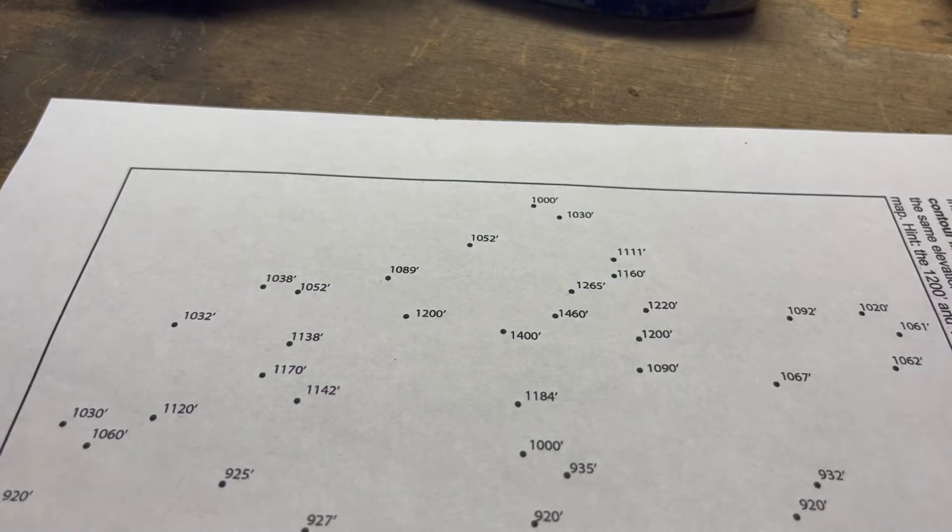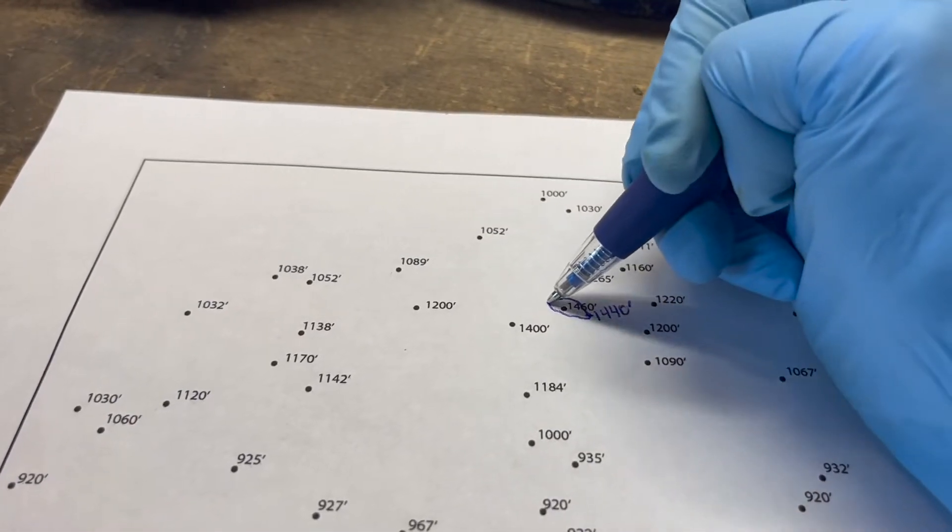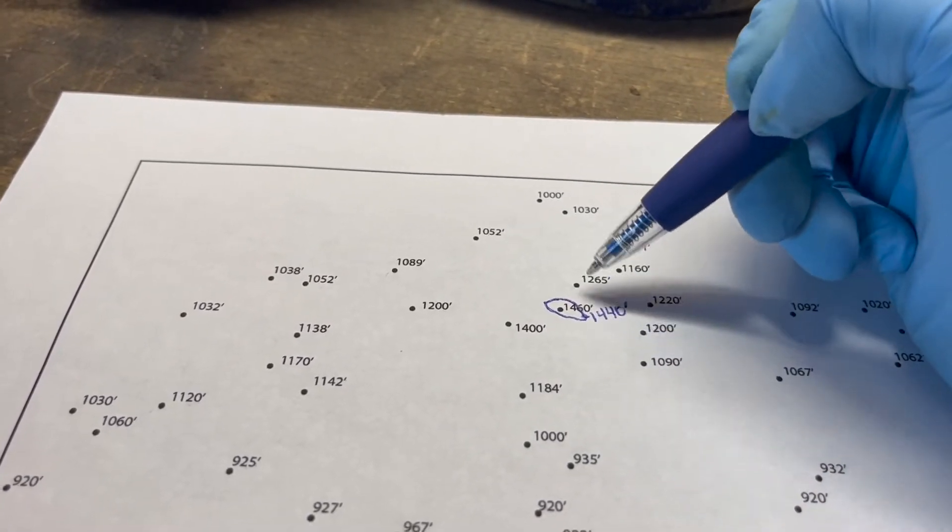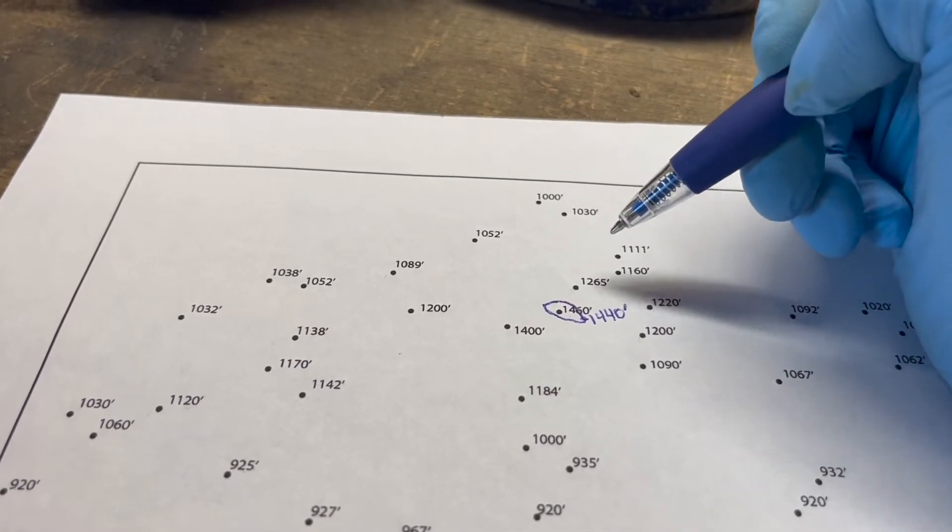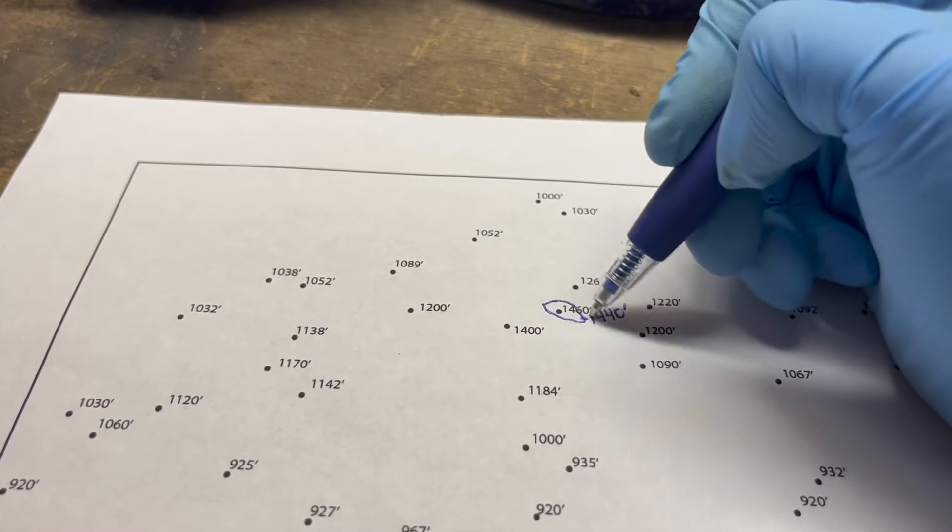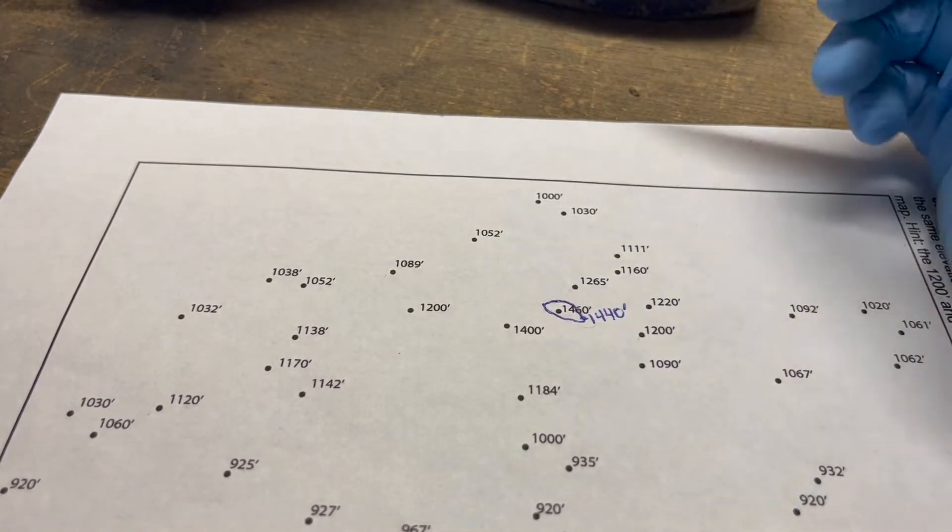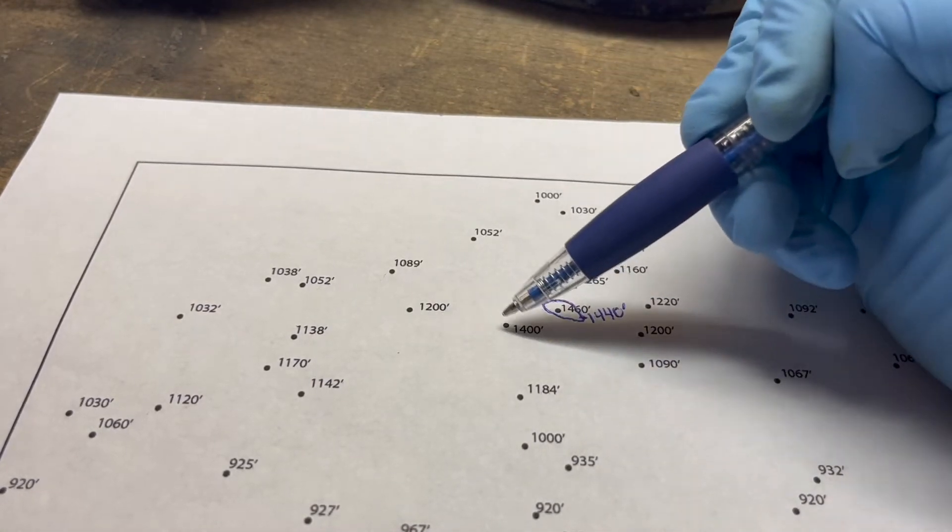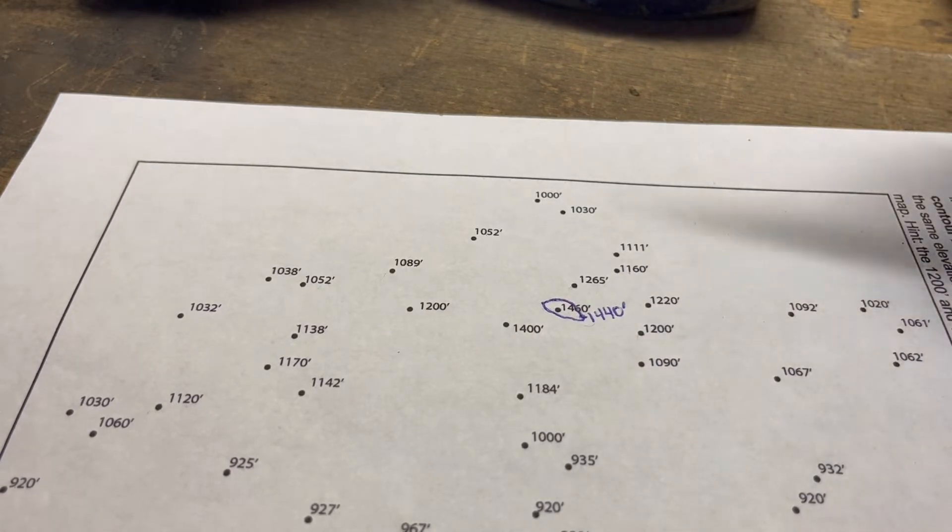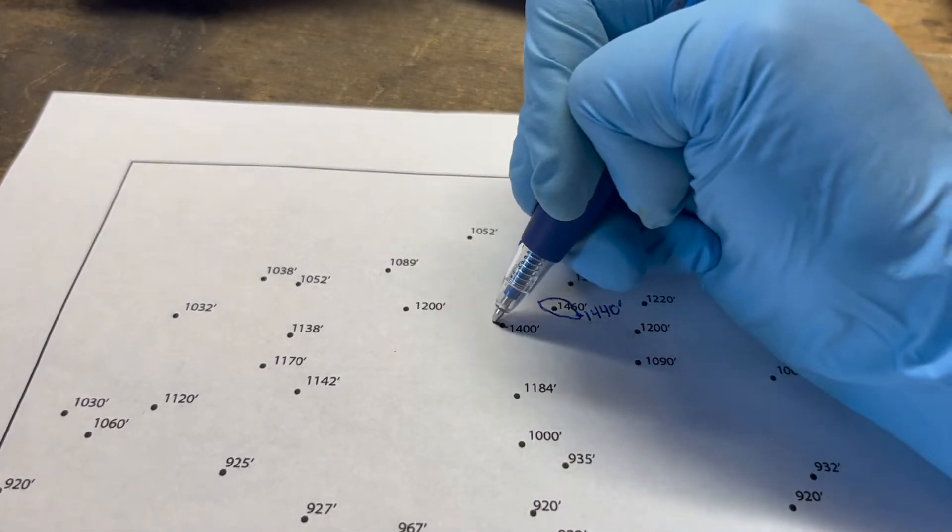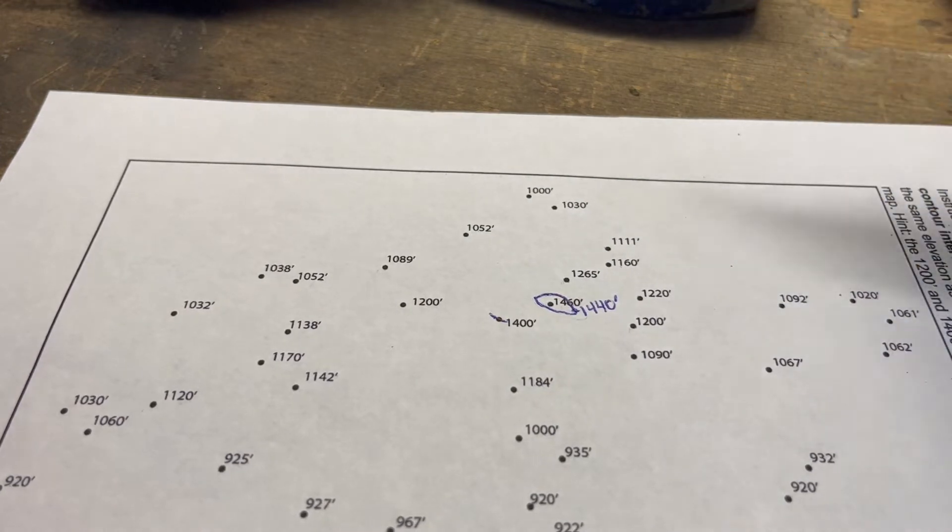I said we have a contour interval of 40 feet. I can start by drawing my first contour line around the 1460 feet here and say that is 1440 feet that we're representing, a line or an area of equal elevation. As we move out, we see 1400 here.